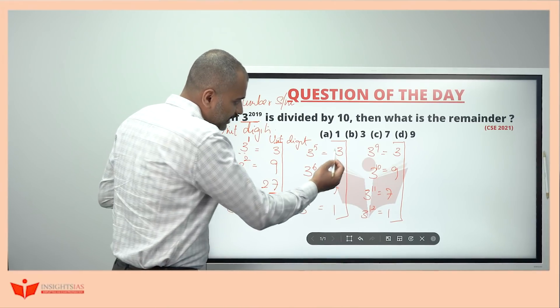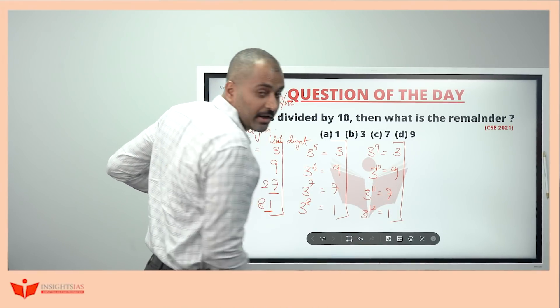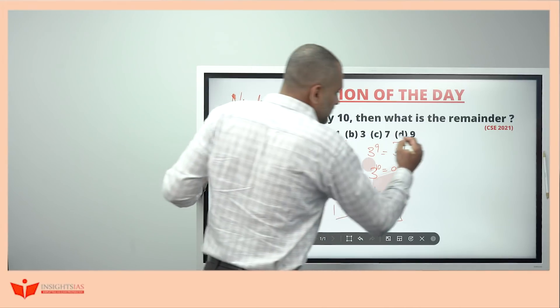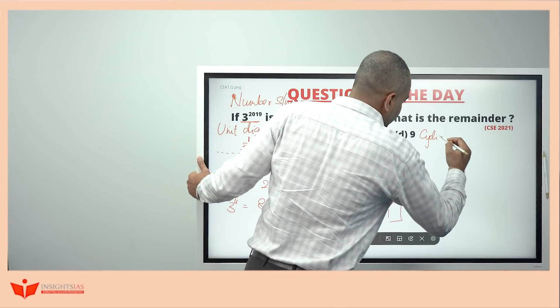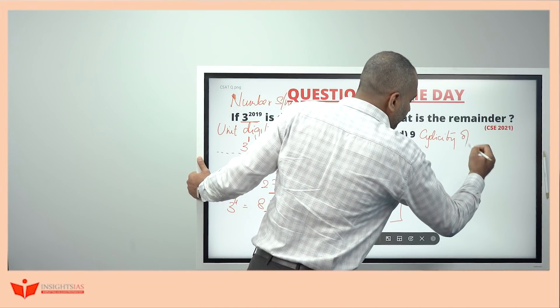See, 3, 9, 7, 1. 3, 9, 7, 1. 3, 9, 7, 1. This is called cyclicity of 4.